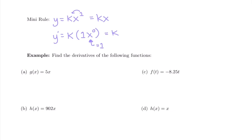So when you have x to the first power or just a regular x, you don't even really have to think about bringing down the power and subtracting 1 for the new power, because when you bring down that power 1 you're just going to end up with the number in front of x. For instance, if you had 2.92x as your function — 2.92 times 1 stays 2.92, and x to the 0 is just 1 — so the derivative of 2.92x is 2.92.